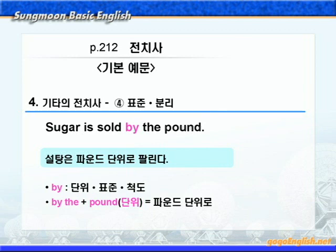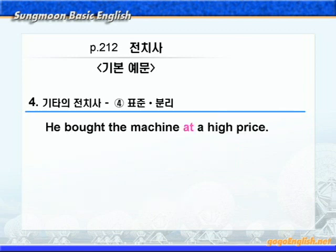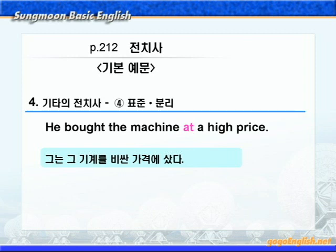다음으로 전치사 at을 보시죠. '그는 그 기계를 비싼 가격에 샀다'가 됩니다. 여기에 쓰인 at은 가격을 나타내는 at이죠. at a high price하게 되면 '비싼 가격에'라는 말이 되는 것입니다. 이렇게 at은 가격, 속도, 정도 혹은 비율을 나타낼 수 있습니다.